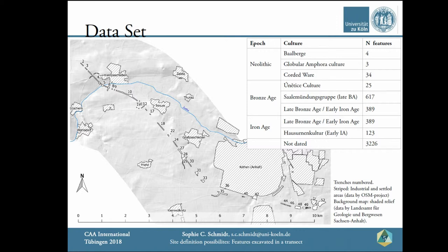There are a number of features dated to late Bronze Age and early Iron Age, and that's a known problem in Middle Germany — the settlement ceramics in this time period are very similar. Researchers agree that there is actually a continuation between the late Bronze Age and the early Iron Age, with only burial practices changing. I deal with this uncertainty by adding the ambiguous features to both the late Bronze Age analysis and the early Iron Age analysis.